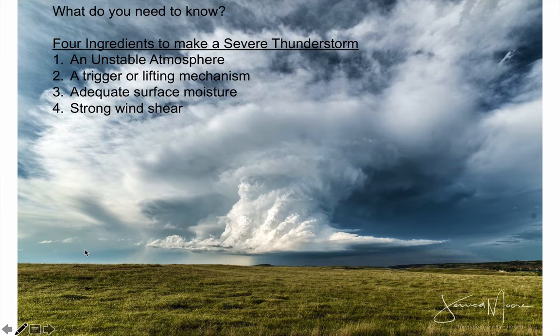And finally, you need strong wind shear — a change of wind speed and direction with height. When those four things come together, you get a picture like this supercell thunderstorm photographed by Jessica Moore sitting right over parts of Montana.